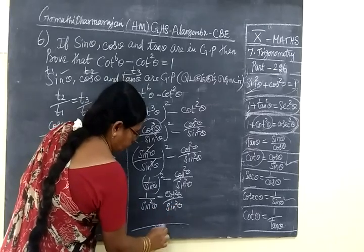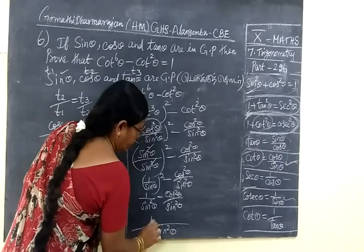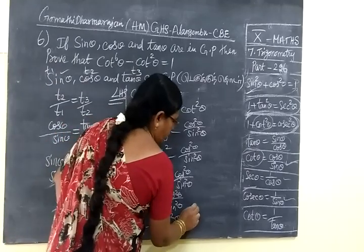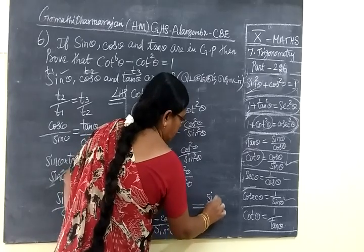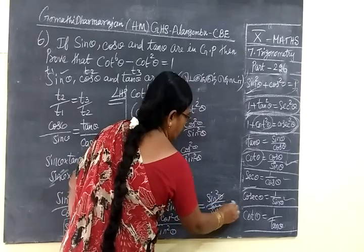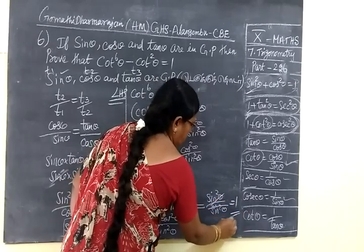Numerator is equal 1 minus cos square theta. 1 minus cos square theta is sin square theta by sin square theta. If you cancel, that is 1.